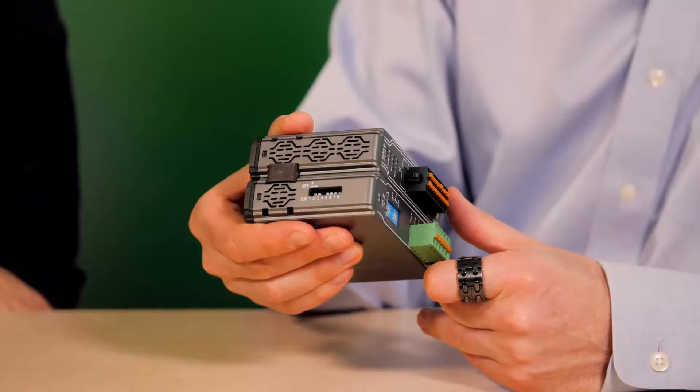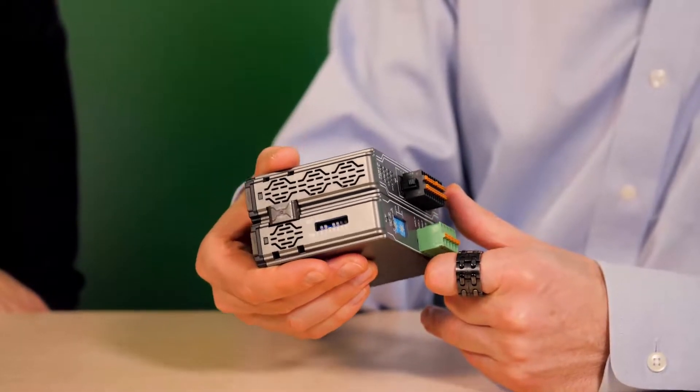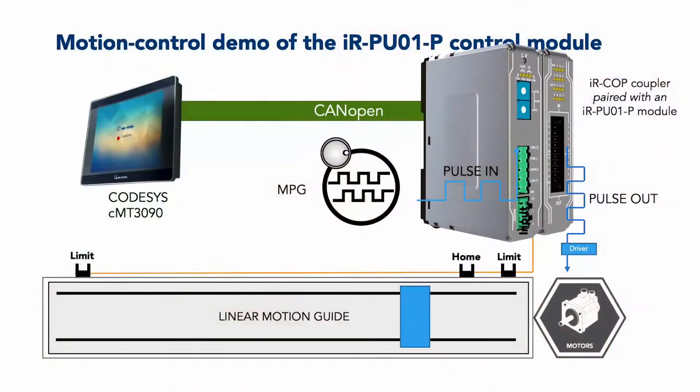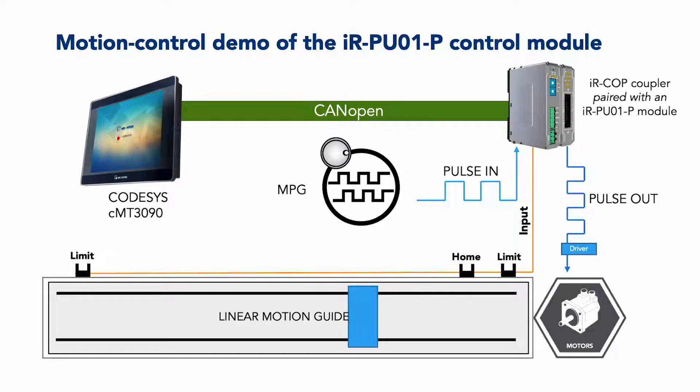In fact, one IR series coupler can connect up to four IRPU01P modules at a time.